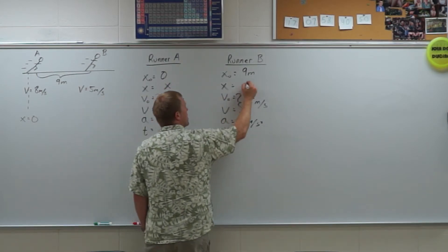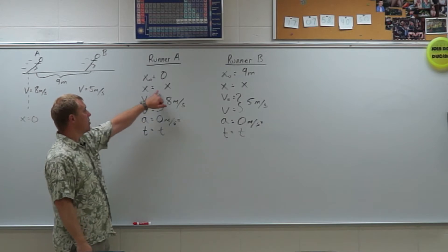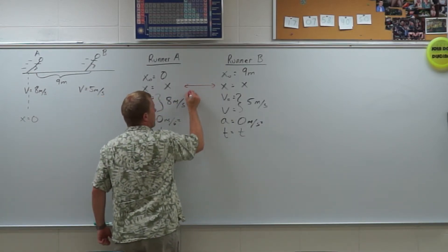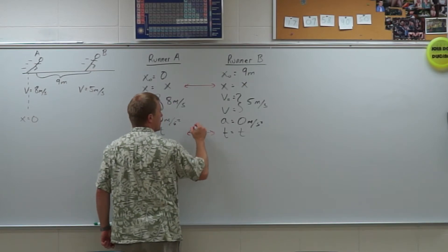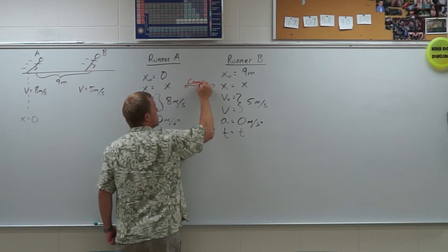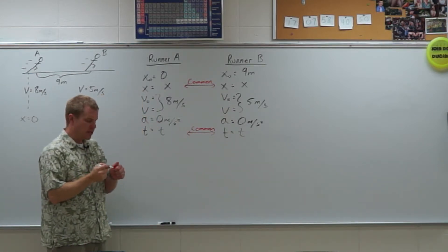Now, when A catches B, they're going to have the same final position. So this x is the same and this time is the same. So these are our common variables. These are the things we're going to set equal to each other when we solve our system of equations.